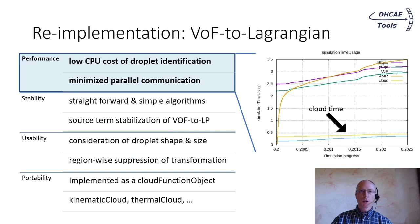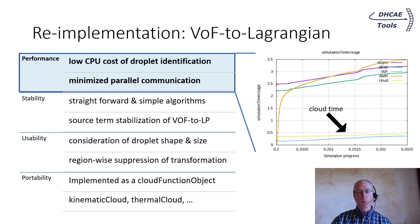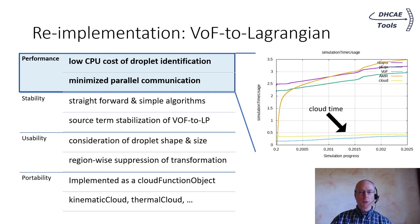The VoF-to-Lagrangian function is essential because it allows reducing the grid size for the volume of fluid part and therefore speeds up the simulation indirectly. Of course, the function should not slow down the simulation itself, so a low CPU cost for droplet identification is important. In particular, the parallel communication for the droplet transformation was minimized. In the chart, the yellow line indicates the time spent for the VoF-to-Lagrangian function and for all the particle transport. In comparison to all other equations it is negligible, and in the end the time for the adaptive mesh refinement and unrefinement becomes dominant.